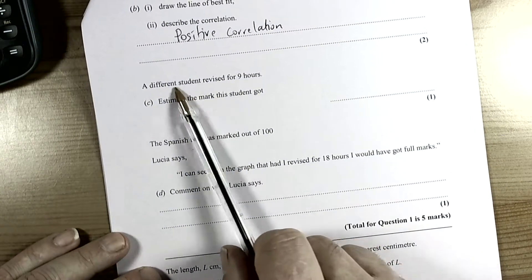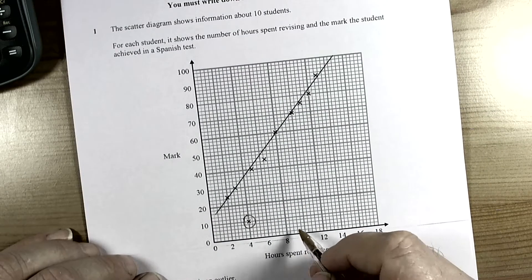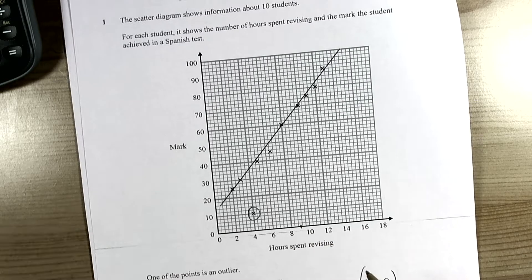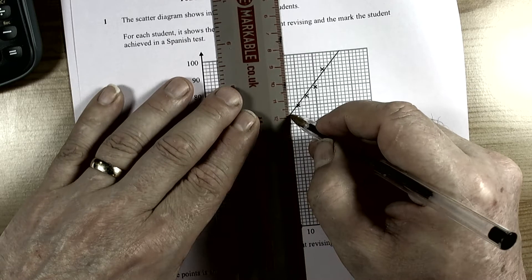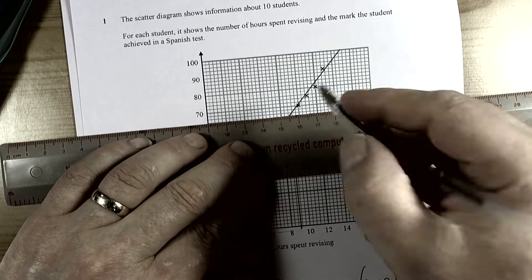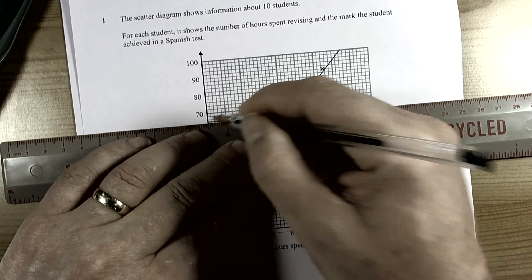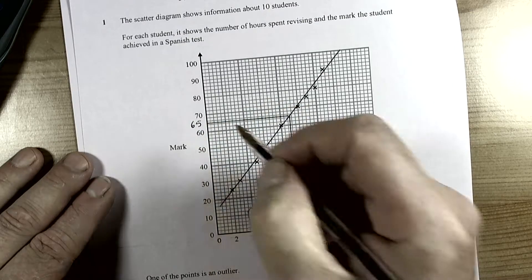The question goes on and says a different student revised for 9 hours, estimate the mark. So we find 9 hours on the scale and we come up to the line of best fit. And we come across and according to this correlation, we're going to expect this student to get about 65 marks.